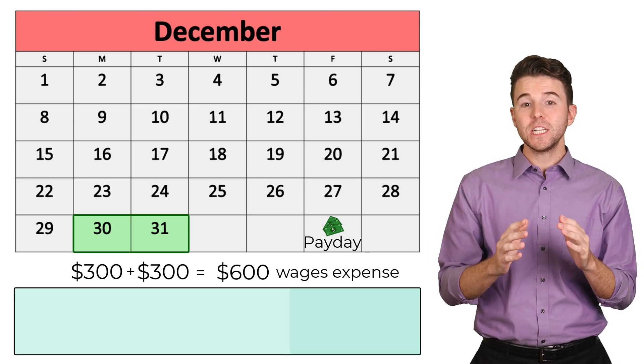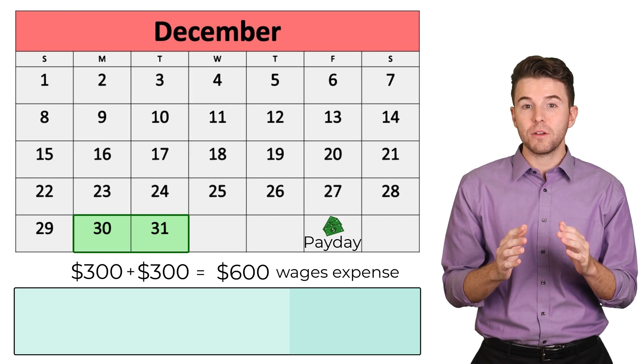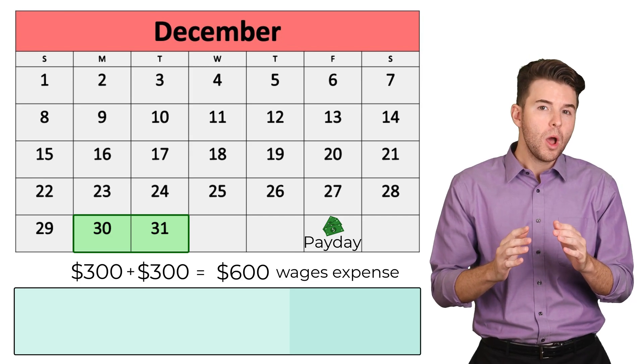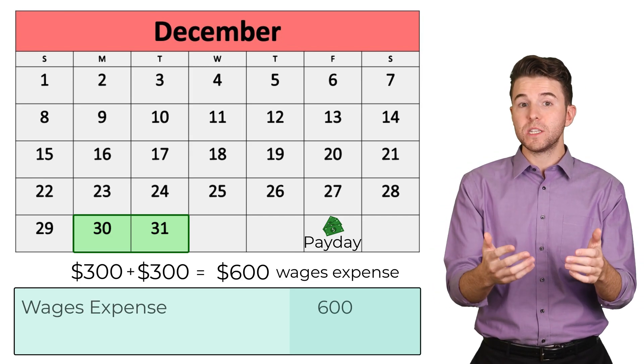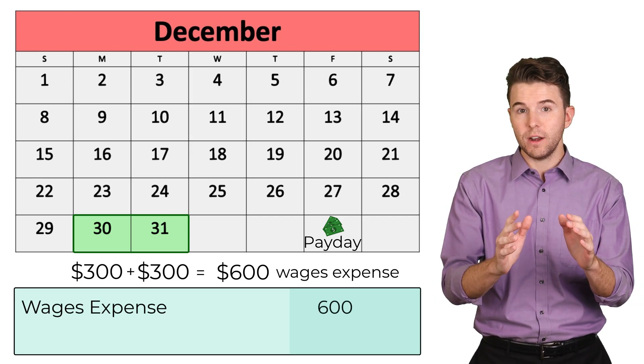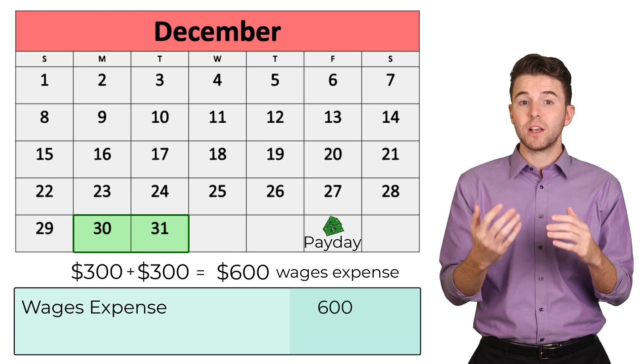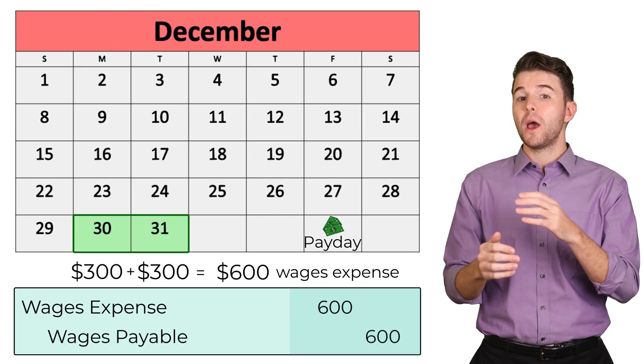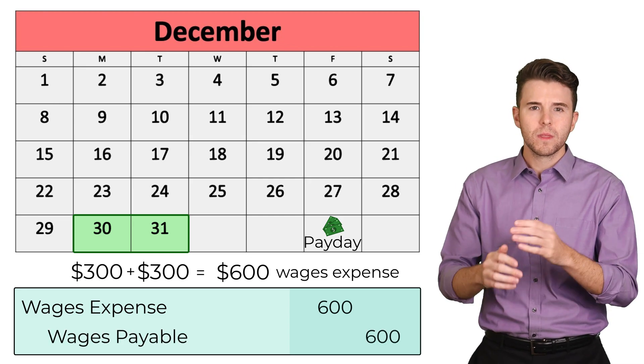The adjusting entry on December 31st would include a debit to wages expense for $600, and a credit to wages payable for $600.